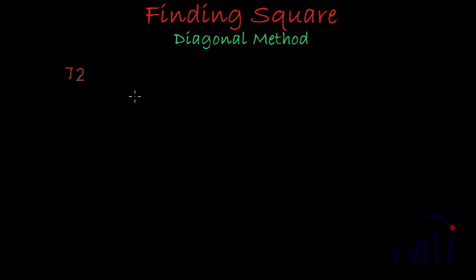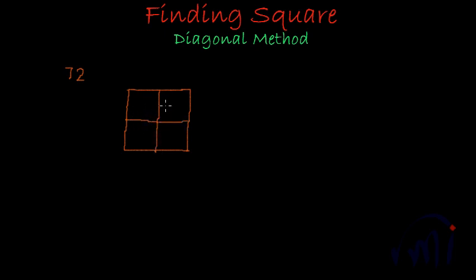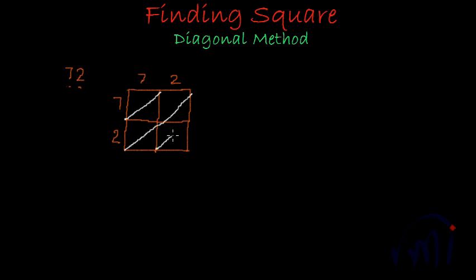What I am going to do is draw a square and partition it in such a way that we have two rows and two columns. Why two rows and two columns? Because 72 has two digits. Then I'll write 7 and 2 over the columns, and 7 and 2 along the rows. And after this I'll draw the diagonals of the smaller squares.